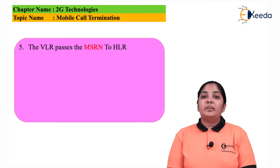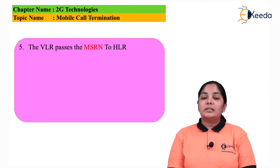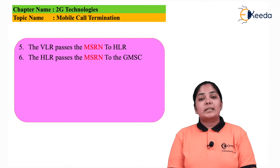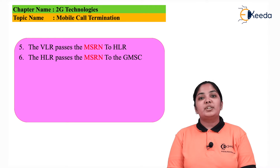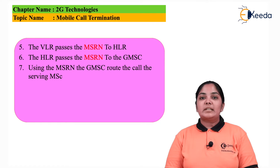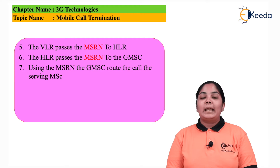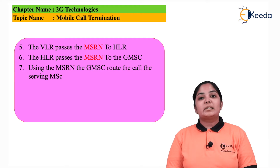In the fifth step, the VLR will return the MSRN, i.e. the roaming number of the mobile station. In the sixth step, the HLR will return the Mobile Station Roaming Number to the GMSC. In the seventh step, the Gateway MSC will forward this roaming number and the mobile number to the MSC that is near to the mobile phone station.